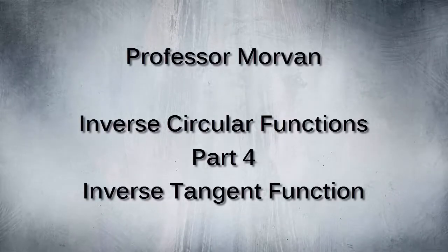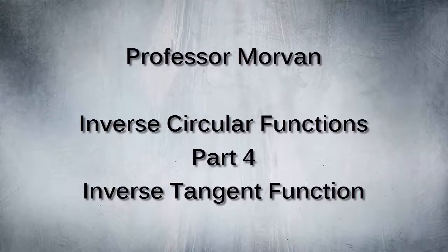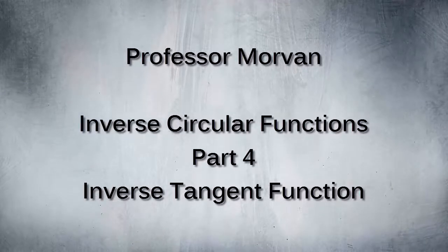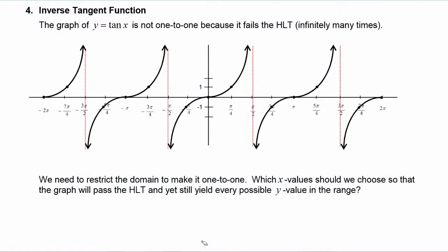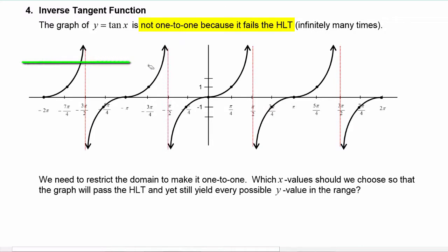In part four of our lesson on the inverse circular functions, you will learn about the inverse tangent function. As we look at the graph of y equals tangent of x, we can see clearly that it is not one-to-one because it fails the horizontal line test. A horizontal line passing through the function will intersect the graph at many points — in fact, infinitely many times.